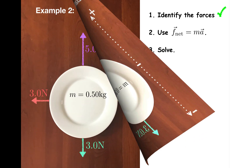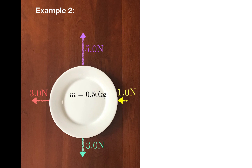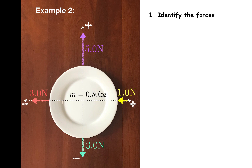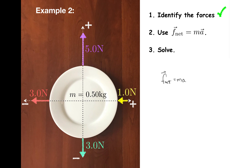Here's a second example, and this time the plate has four forces acting on it, two in the x direction and two in the y direction. Let's find the acceleration of the plate. Let me start by drawing some axes so that we can get positive and negative directions squared away. Once again, the forces are already drawn, so step one is done, and we can go right on to steps two and three, which are to apply Newton's second law and to solve. For step two, I need to look at the diagram and replace the F net part of F net equals ma with the forces that are shown on the diagram.